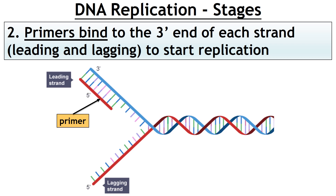Here is the second stage. Remember we mentioned that you need a primer to start off the process. You need to remember the orientation of your two strands — the three prime end at the top of one and the three prime end at the bottom of the other. The primers bind to a specific part of the DNA molecule — they bind to the three prime end of each strand. We call these the leading and the lagging strand, and the primers are required to start replication.